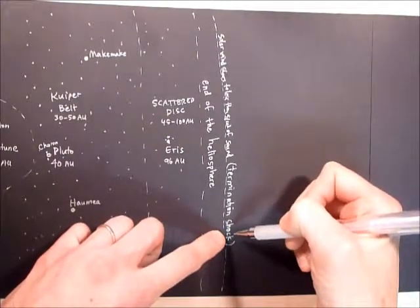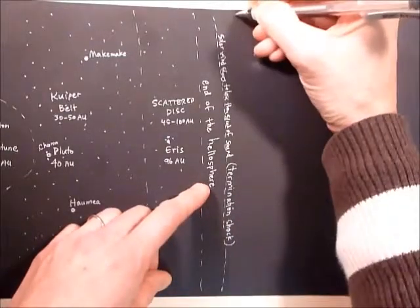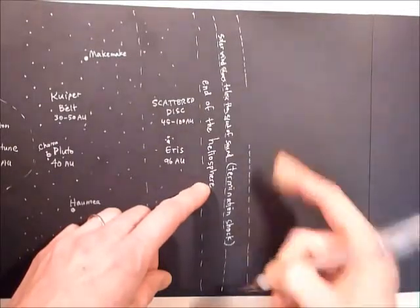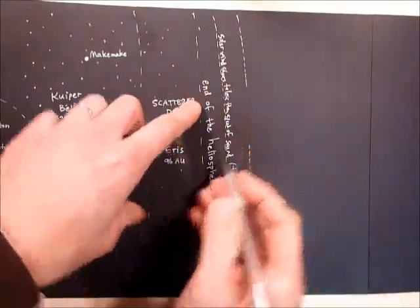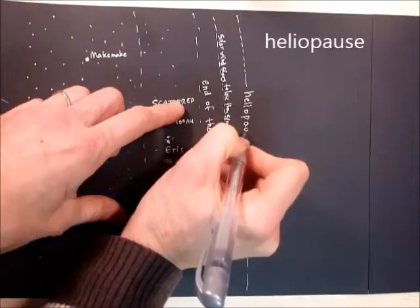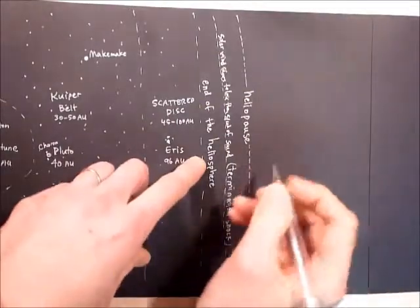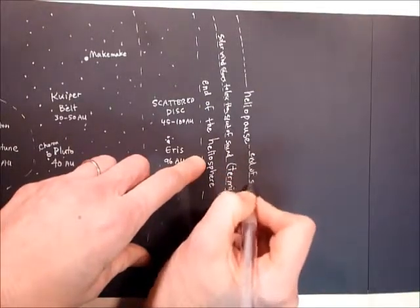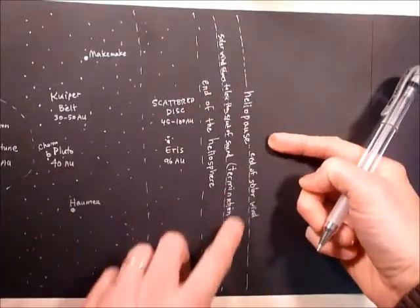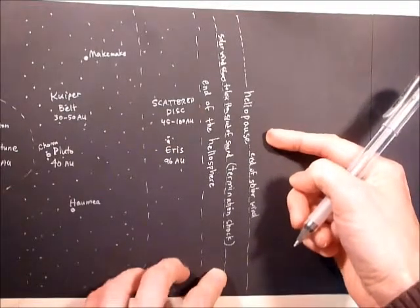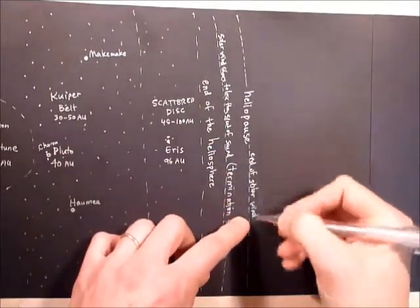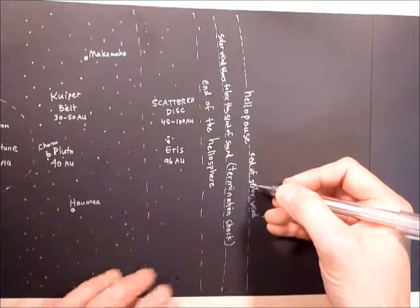And then you have a place here where it kind of ends. Once again, there's no lines in space. Kind of an imaginary, there's no definite actual area. It's kind of a little bit vague here. But this is called the heliopause. And this is where you pretty much have the end of the solar wind. This is about how far the sun's effect goes. Just about to here. This is on the order of like 100 to 120 astronomical units away.